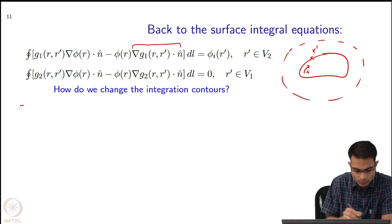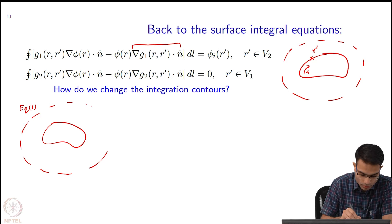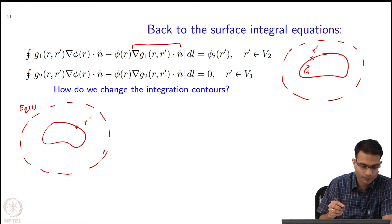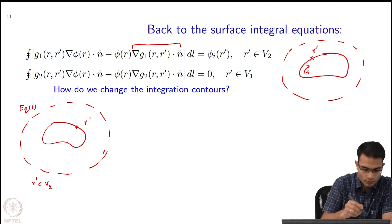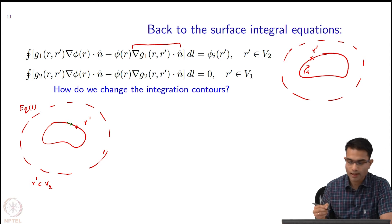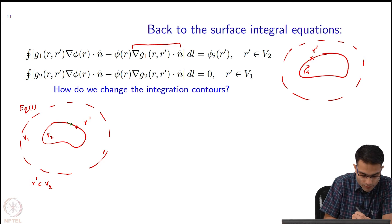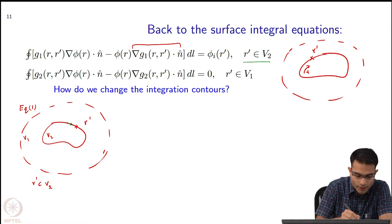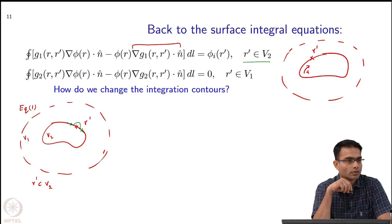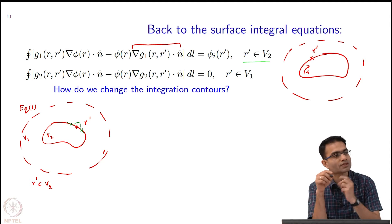Let us look at equation 1. Here r' is placed on the boundary, and equation 1 corresponds to r' belonging to v2. If I label the two regions v1 and v2, the contour should bend in such a way that r' still belongs to v2. The way to achieve this small bend is that the point r' ends up inside v2 because I have changed the surface just a little bit.